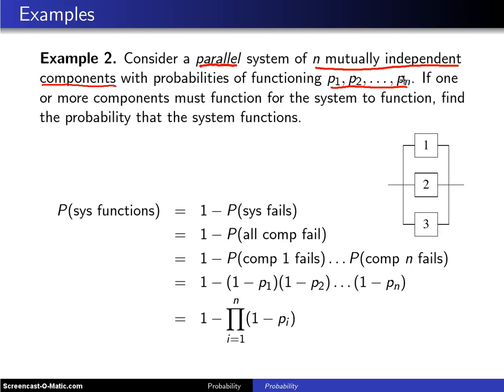If one or more of the components must function for the system to function, find the probability that the system functions.